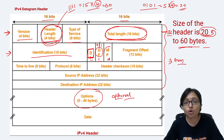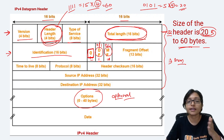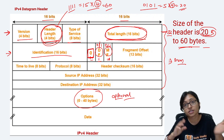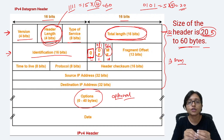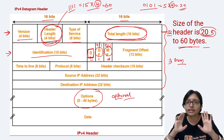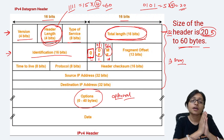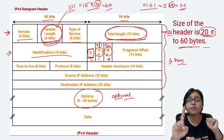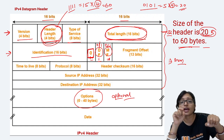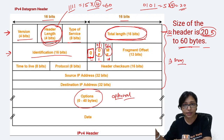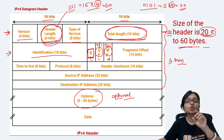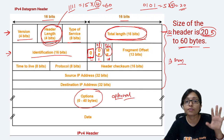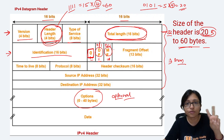The next 1 bit is the More Fragment flag, which can also be 0 or 1. If it is 0, the receiver understands there is no more fragment — either it is the last fragment or there was only one fragment. If it is 1, the receiver understands it is not the last fragment and more data is coming, because it was a long packet split into parts. Only 1 bit is allocated for this.